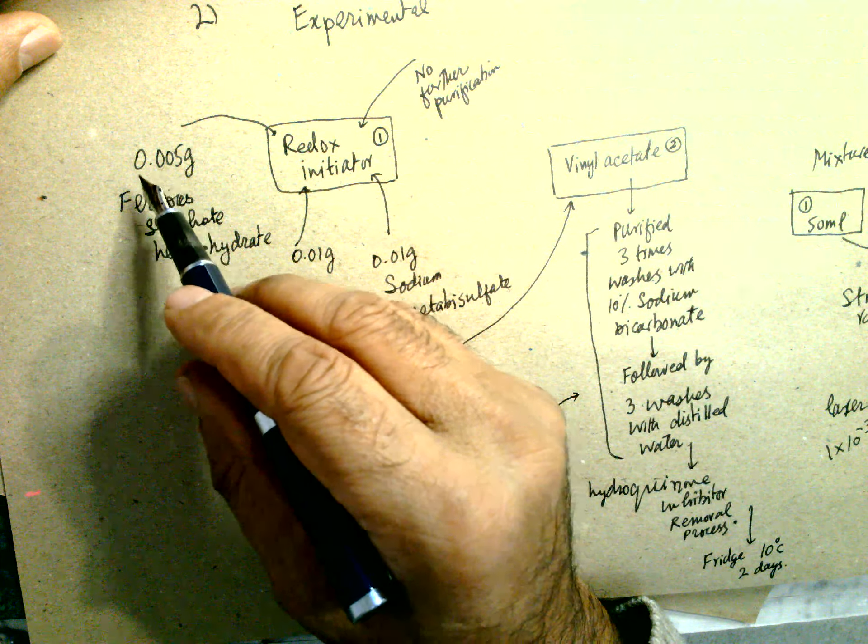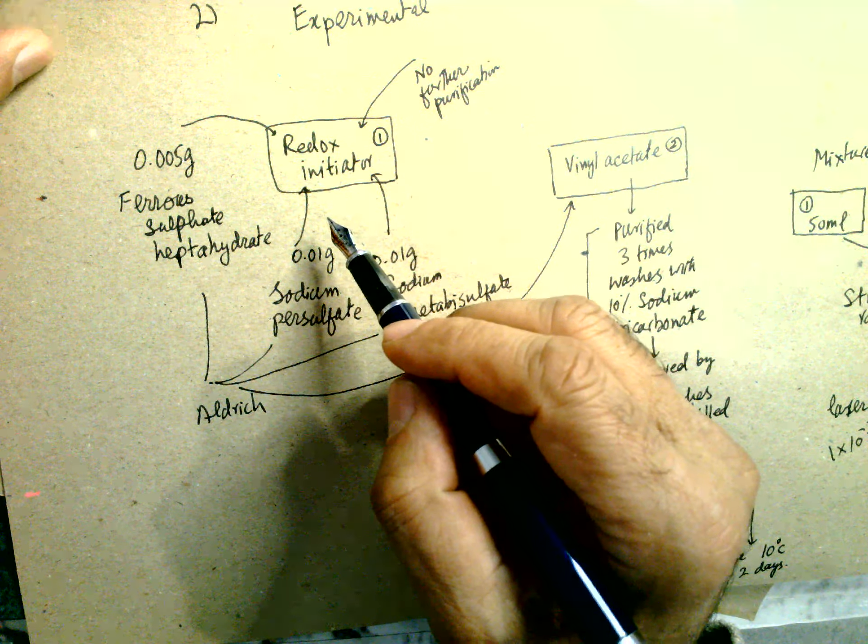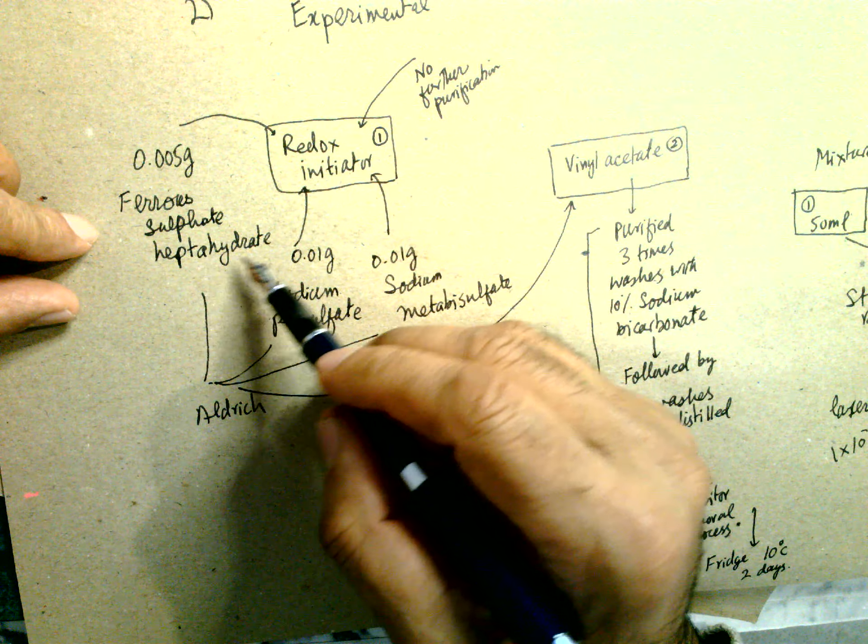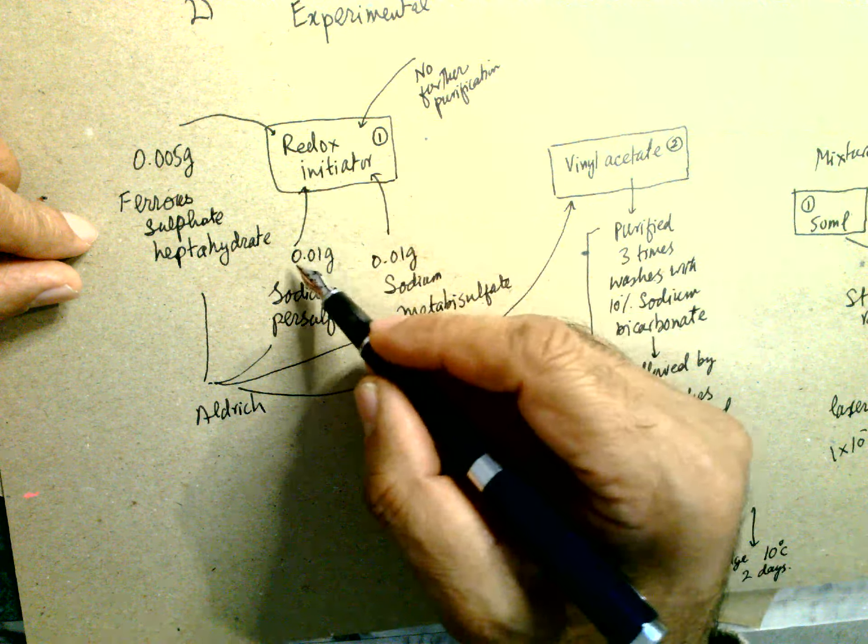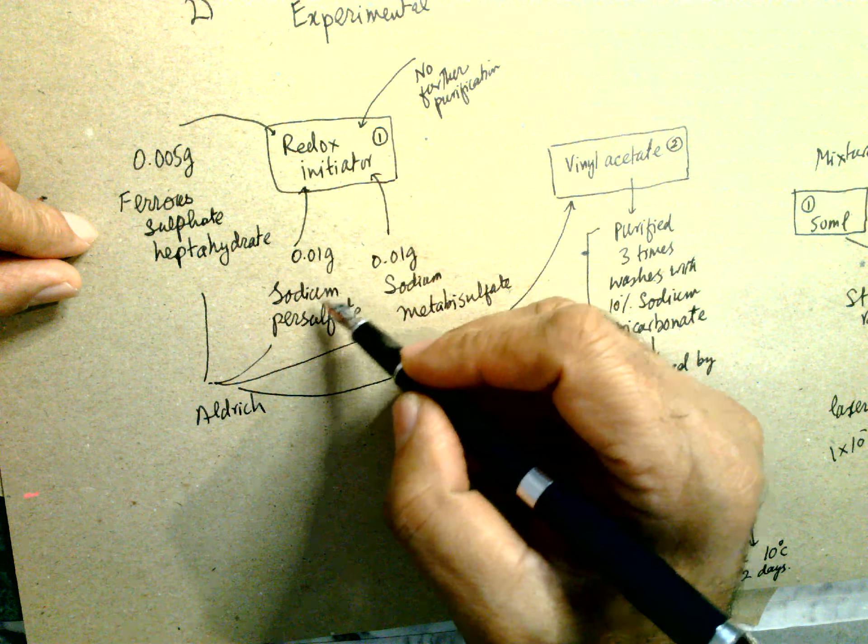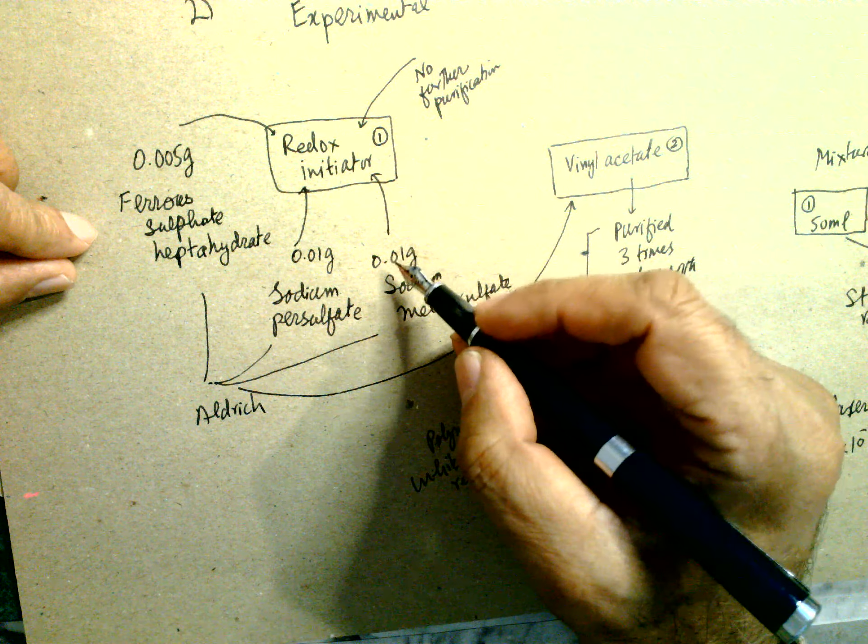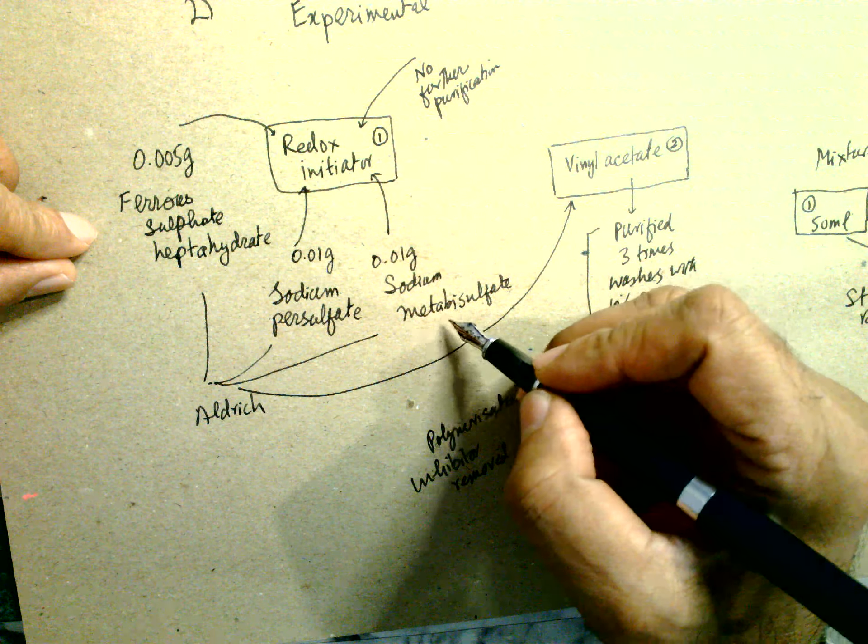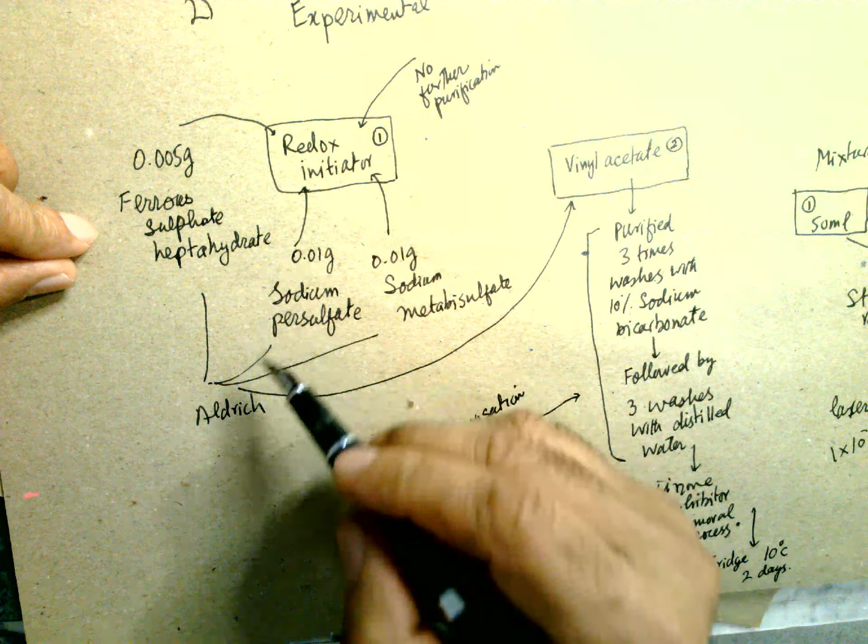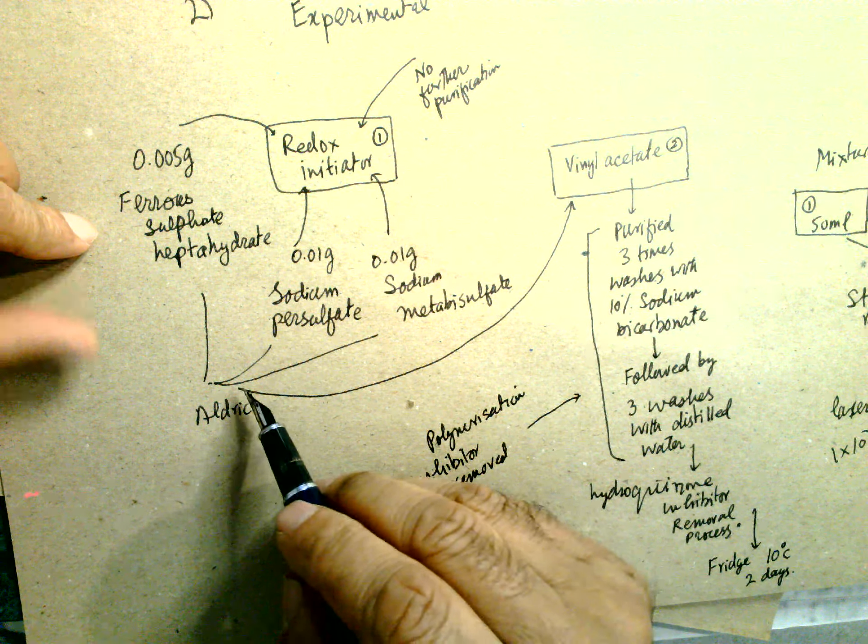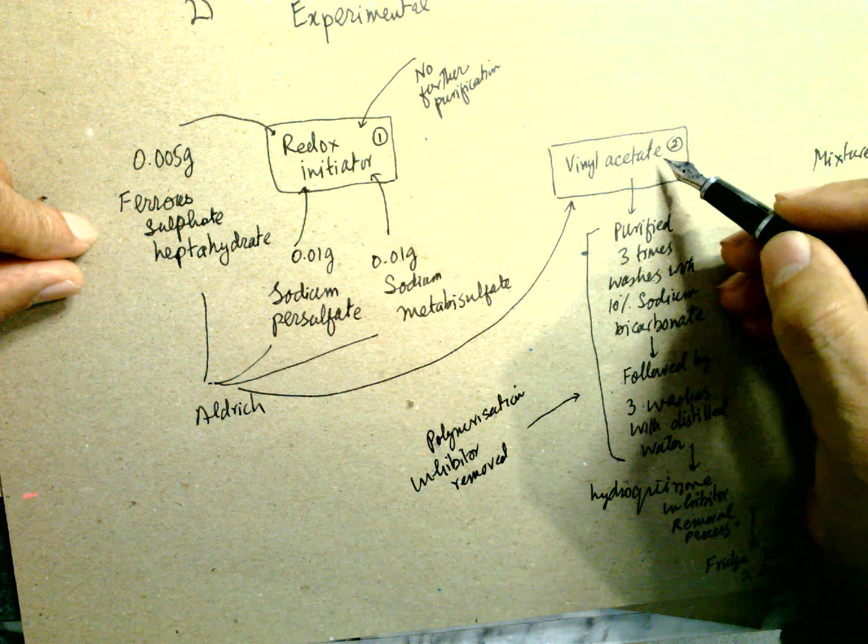0.01 gram sodium persulfate and 0.01 sodium metabisulfate were used in this one, and vinyl acetate was added. It was purified three times, washed in 10% sodium bicarbonate followed by three washes with distilled water.